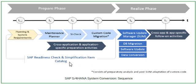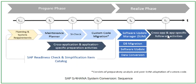Next is the data conversion. The data in the ERP system is in the Oracle database, and the target database is the S4HANA database. The SUM tool converts the Oracle data to S4HANA data. After completion, the SUM tool checks the cross-application and application-specific follow-on activities.